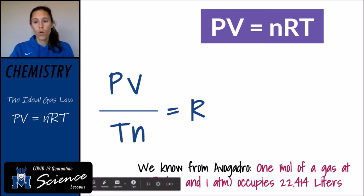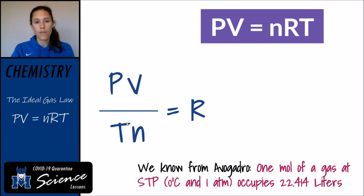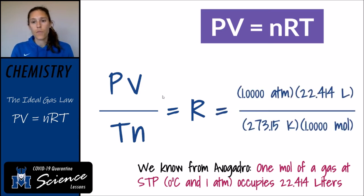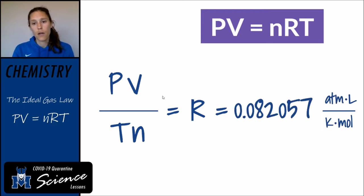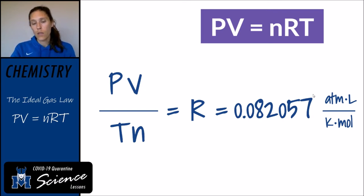We know that one mole of a gas — so N equals one — at standard temperature and pressure, which is 273.15 Kelvin and one atmosphere, is going to occupy 22.414 liters. So we actually know all four variables from Avogadro, and if we plug those in, we can get a value for R. R is going to be 0.08206 — or 0.082057 with another significant digit — and the units of the universal gas constant are atmosphere·liters per Kelvin·mole.